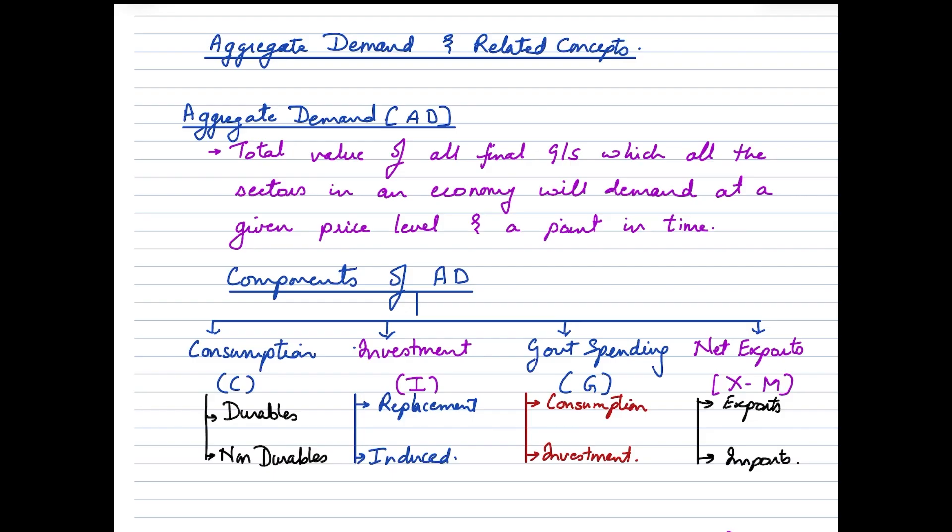When we take a look at aggregate demand, AD for short, it is the total value of all final goods and services which all the sectors in an economy will demand at a given price and at a point in time. Now this point in time is generally one financial year. If we pay attention, we said that it is the amount of goods and services that will be demanded, so it is clear that aggregate demand is planned expenditure or planned spending in the economy. Now actual spending may be very different from planned. It could be less than the planned or greater than the planned spending in the economy.